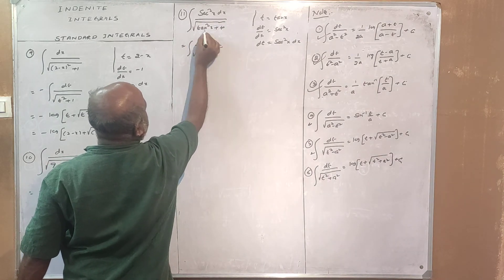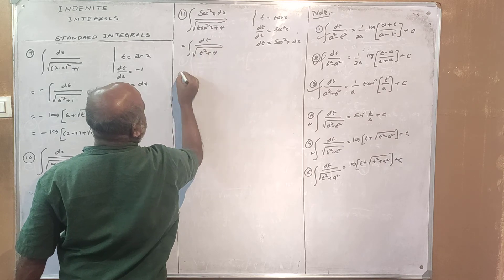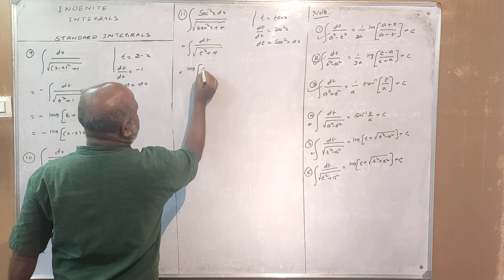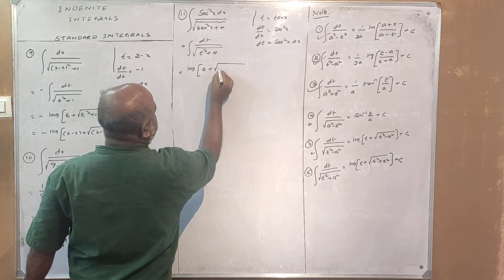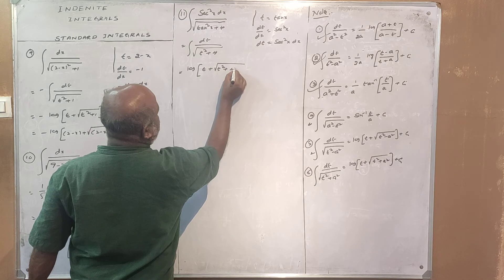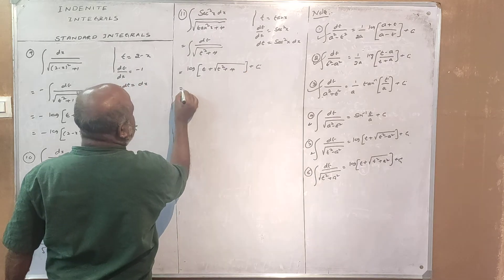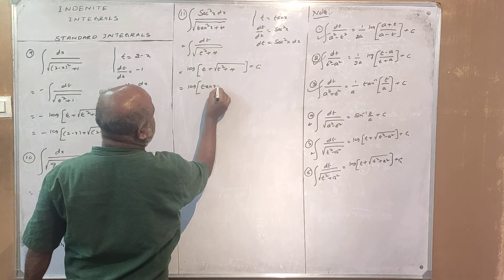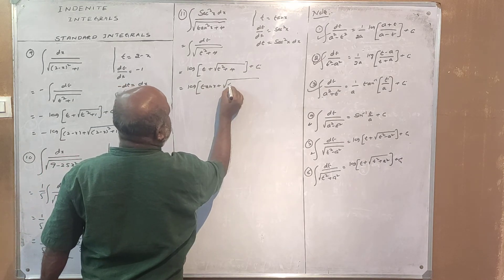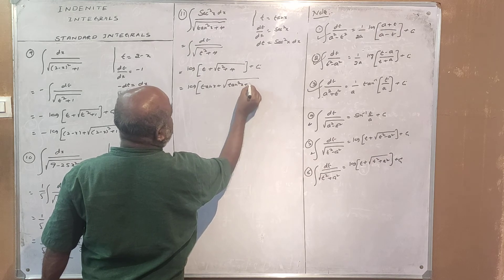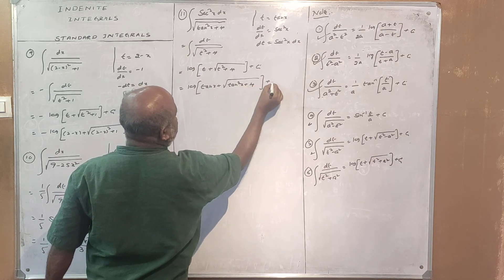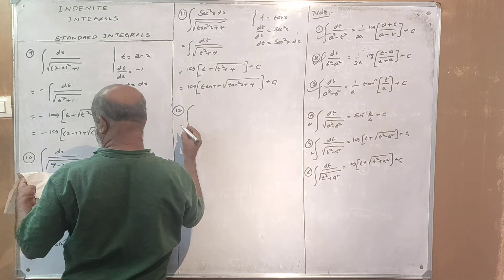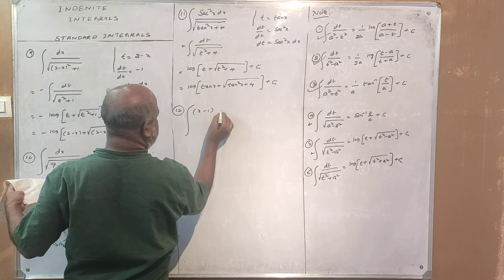The integral of dt divided by root of t squared plus 4 gives log of tan x plus root of tan squared x plus 4, plus C.